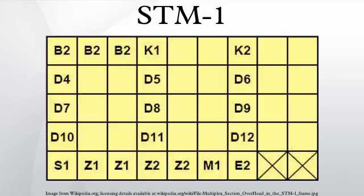E2: Engineering Order Wire, same function as E1 in RSOH. M1 MIS RDI: multiplex section remote error indicator, number of interleaved bits which have been detected to be erroneous in the received B2 bytes. Z1, Z2: spare bytes.